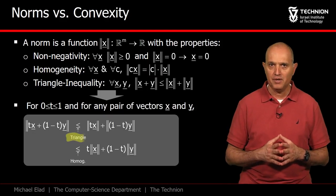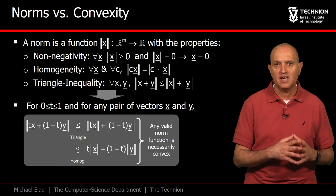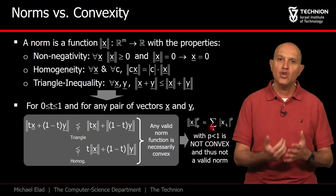Interestingly, as shown here, from these axioms, we get that the norm function is necessarily convex, which explains our claim regarding p smaller than 1 not being a norm.